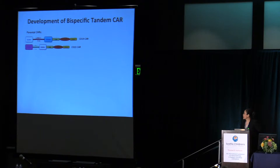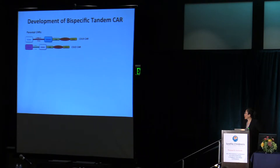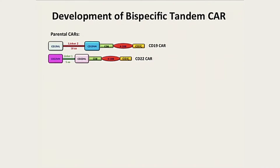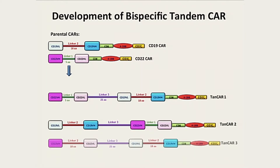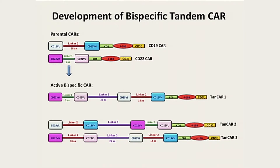As Dr. Fry just reported, our branch has made a very highly active CD22 CAR currently in clinical trial. The most logical approach is to put CD19 and CD22 binding domains in tandem and make them into a single construct. But there are many ways to put them together — such as which binding domain should be placed first and how long the linker should be.